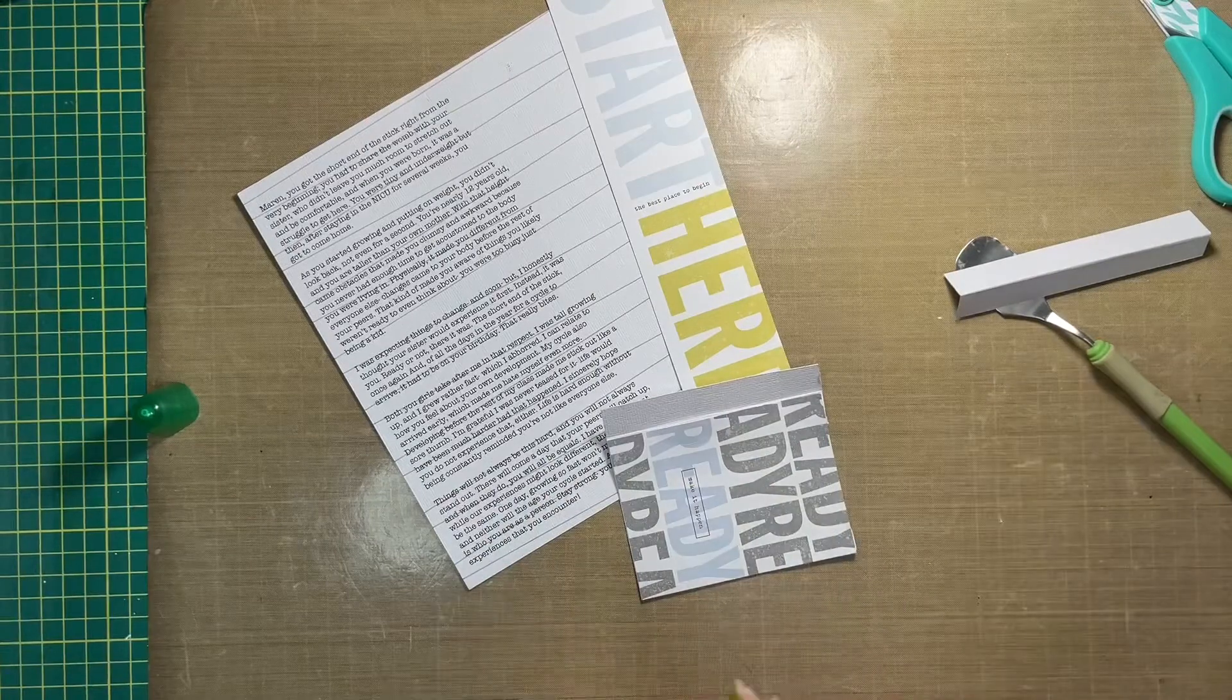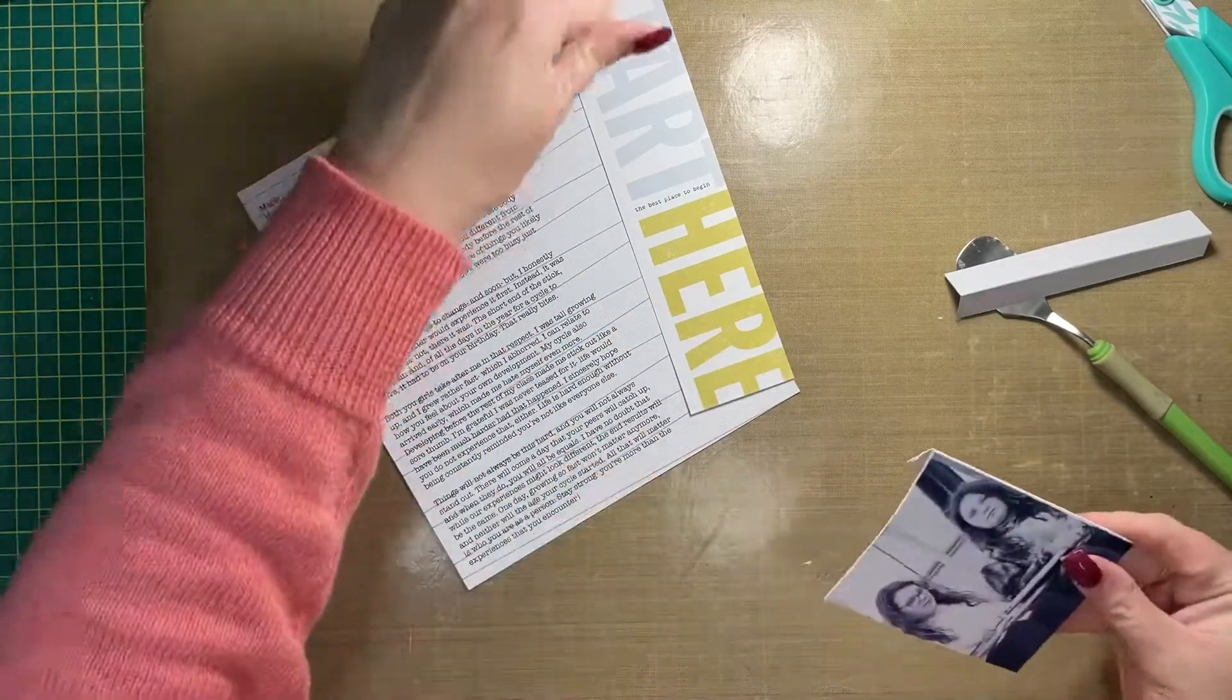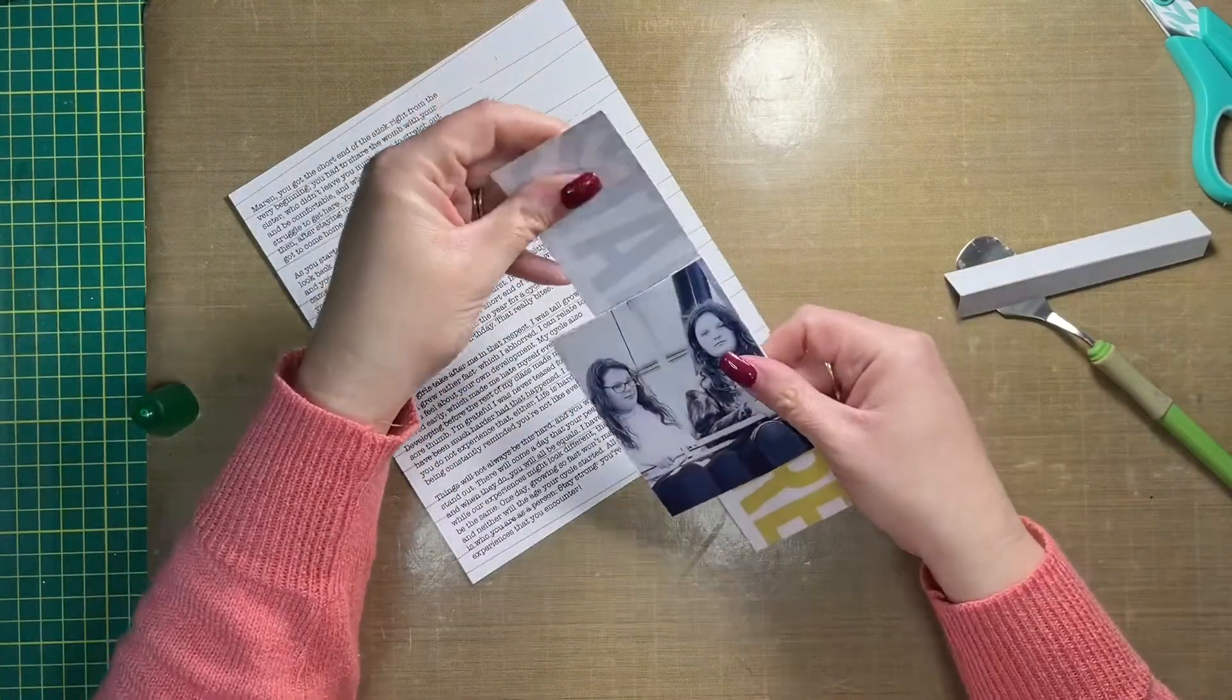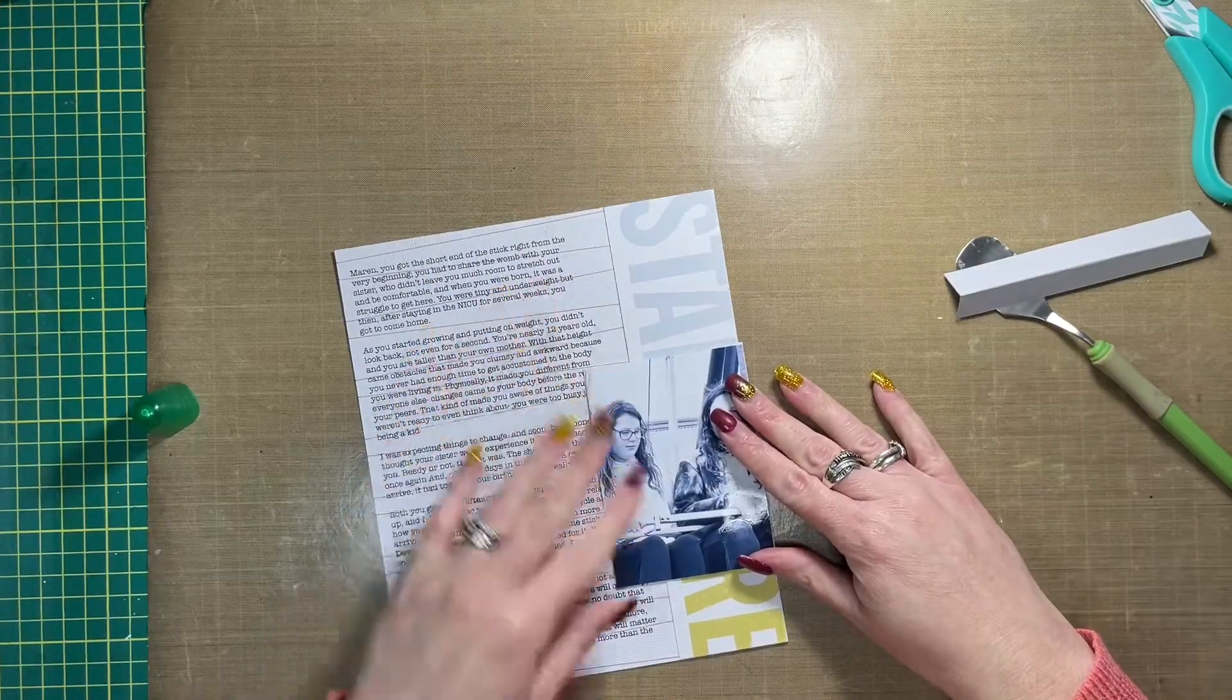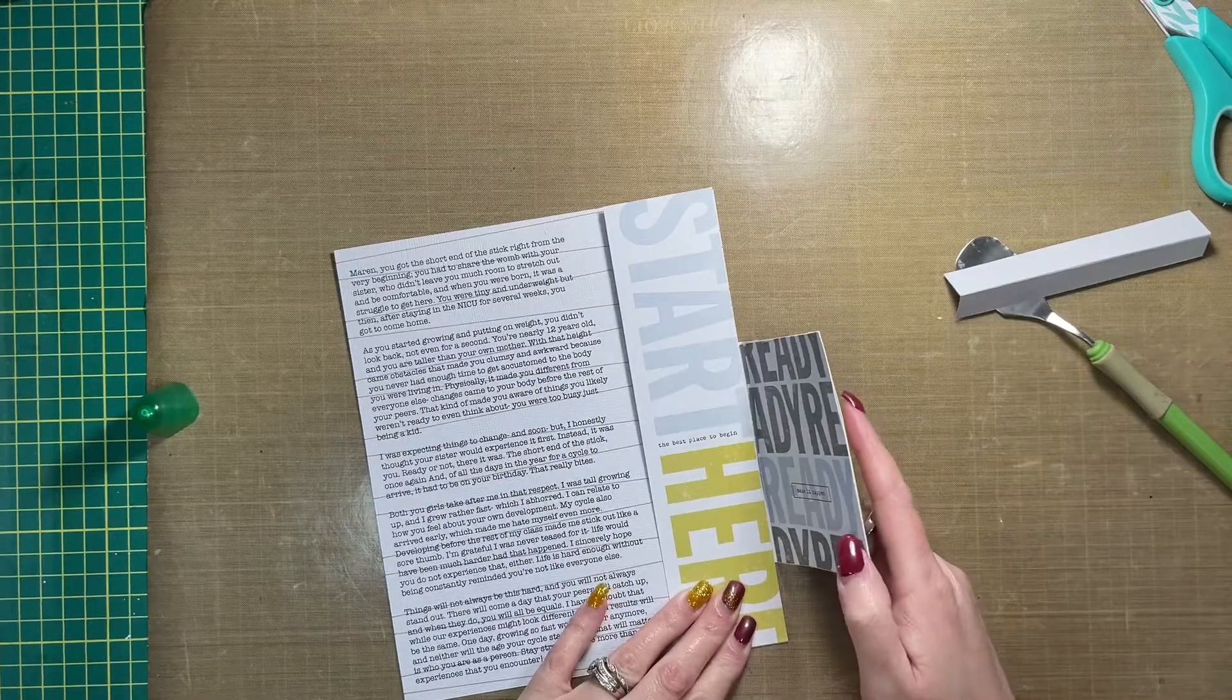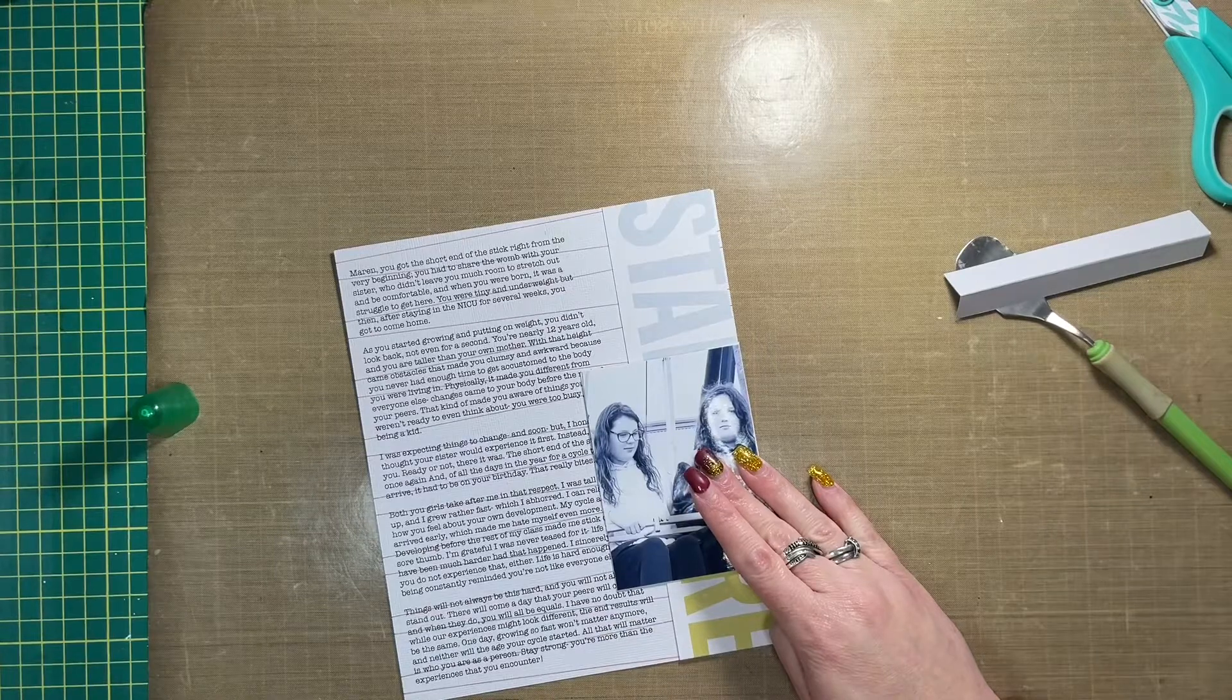So now I'm just testing everything out to make sure my theory actually works. And once I'm happy with that, I'll use my ATG to attach glue to the back side of that, what was the four by eight journaling card.